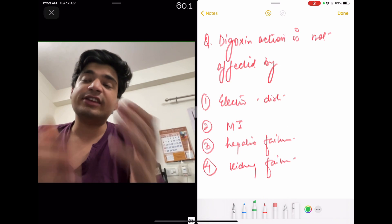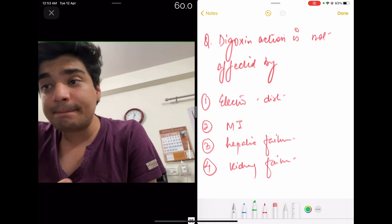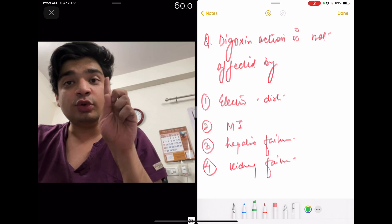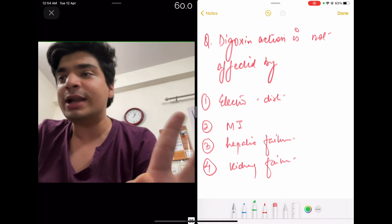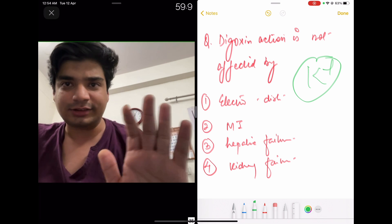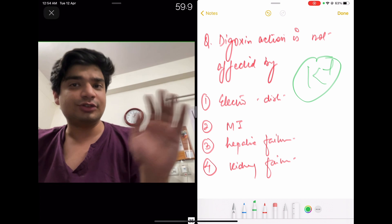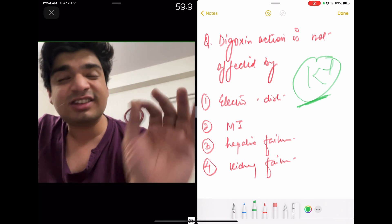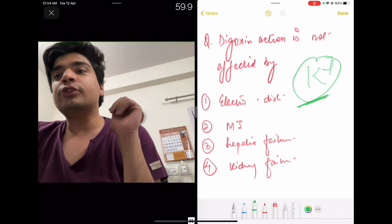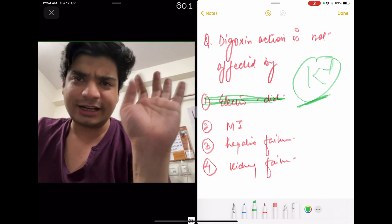I'll solve another question with you. Let's say the question asks is digoxin action is not affected by - electrolyte disturbances, MI, hepatic failure, or kidney failure. Now, at the outset, even if you know just one fact about digoxin action and you would be knowing that, potassium ki waje se digoxin action increases or decreases. Okay. Even if you don't remember whether hyperkalemia causes it or hypokalemia causes it, even if you just remember this small fact that potassium causes it, you will be able to attempt this question if you think in a logical manner and I'll show you how. So first option is obviously eliminated. It's not affected. Potassium affects. Now you don't remember doesn't really matter.